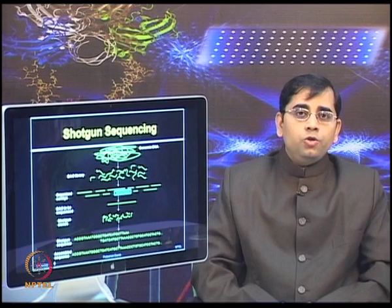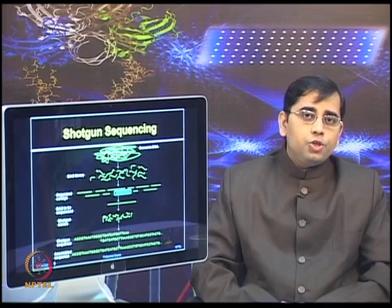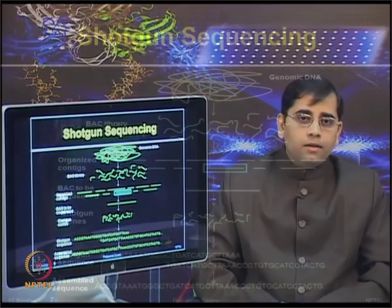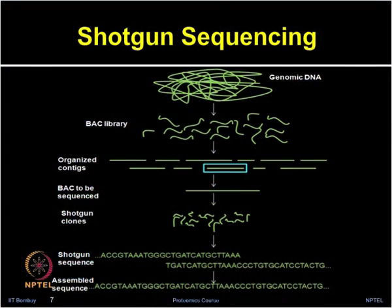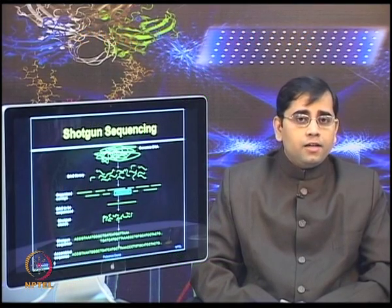To obtain the human genome sequence, the Human Genome Project employed a strategy of shotgun sequencing. From a genomic library, clones were isolated and assembled into a detailed physical map. The individual clones were then sequenced by shotgun sequencing. The Human Genome Project produced a working draft of the human genome using a map-based genomic approach.